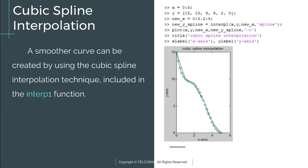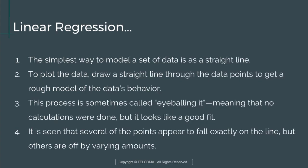Next is linear regression. The simplest way to model a set of data is as a straight line. To plot the data, draw a straight line through the data points to get a rough model of the data's behavior. This process is sometimes called eyeballing it, meaning that no calculations were done, but it looks like a good fit. It is seen that several of the points appear to fall exactly on the line, but others are off by varying amounts.